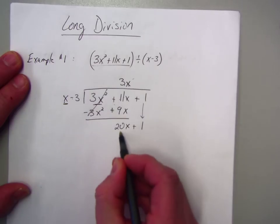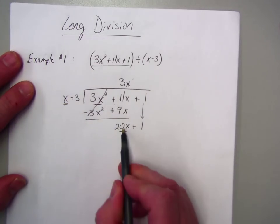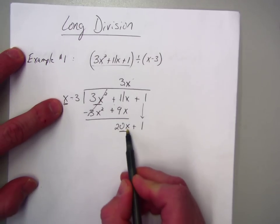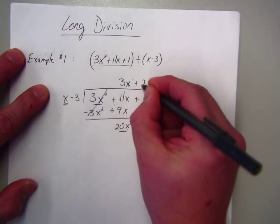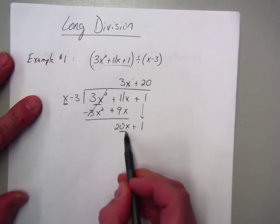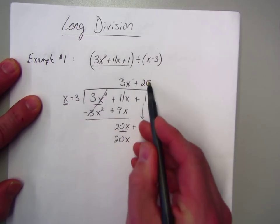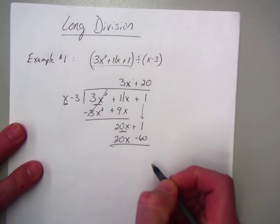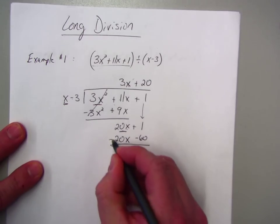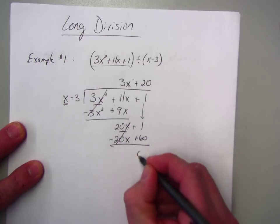And then we look at the first term again, look at the first term. x times what will give me 20x? Well, the x is already there, so that means I just have to multiply by 20. That would be a positive 20. So I'll do 20 times x is 20x. 20 times a negative 3 is a negative 60. Subtract, so that means I change the signs, and I just do it. So I get 0, and I get 61.